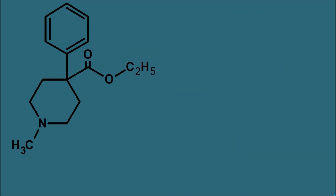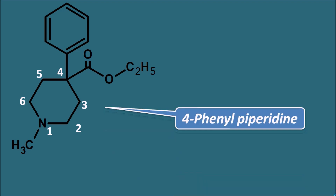This is the structure of Pethidine. We can observe a six-membered heterocyclic ring system with nitrogen — a saturated piperidine ring system — attached with a phenyl ring. Pethidine is chemically classified as 4-phenyl piperidine.